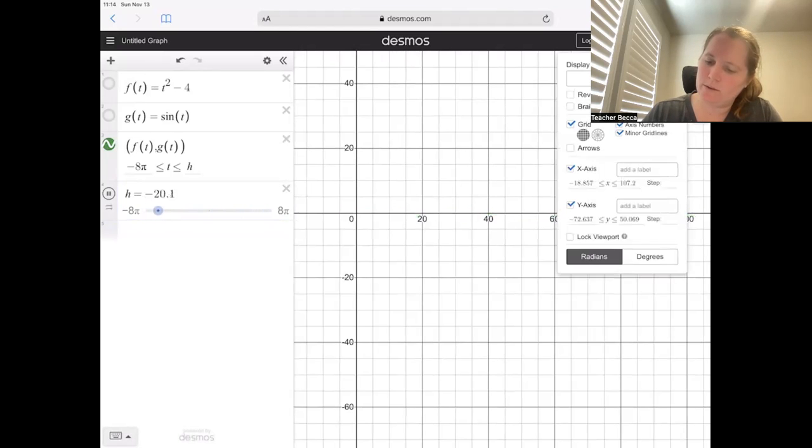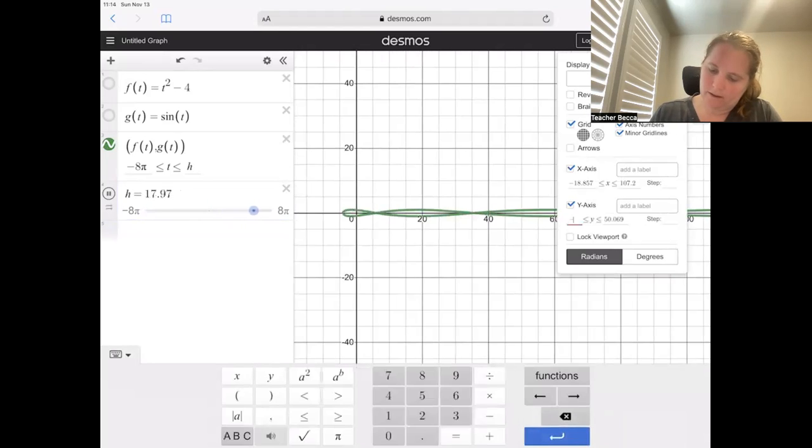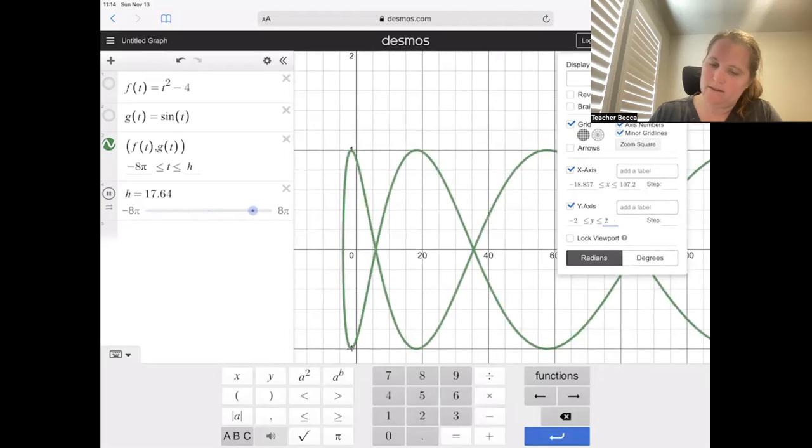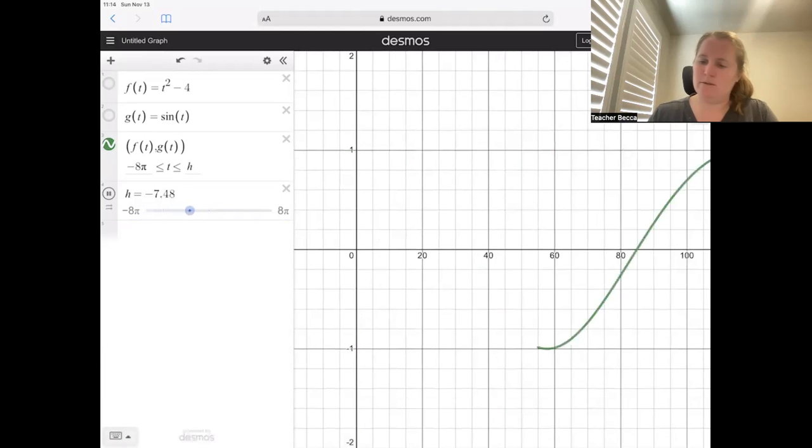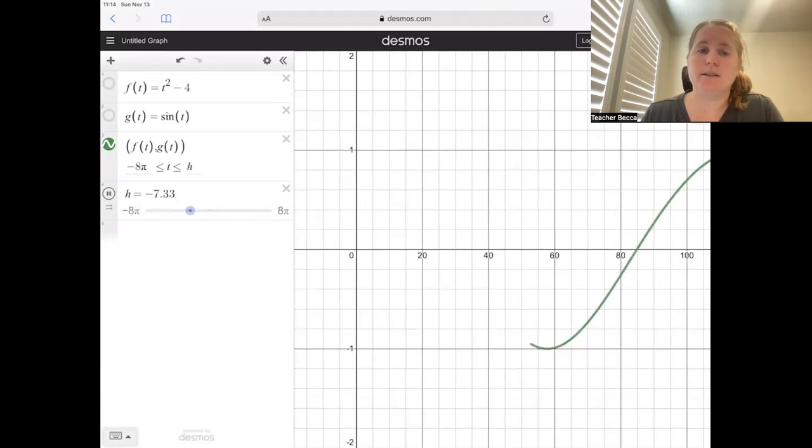I'm going to change my window so that the y values are not as extreme. So let's go from -2 to 2 for my y values. You can see the graph crossing itself repeatedly. So the question is, where does it cross itself? Where does this happen?